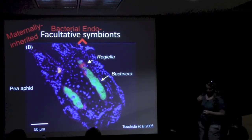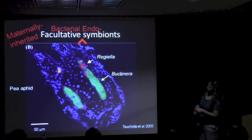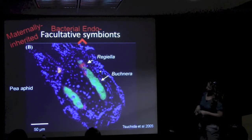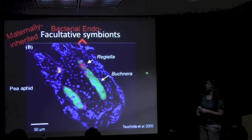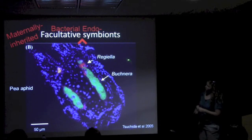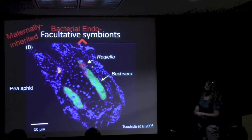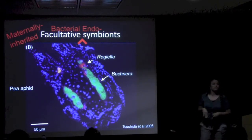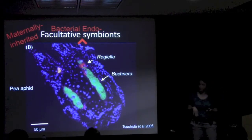As I've been talking, I haven't described the picture. This is again the pea aphid — a different cut through of that U-shaped bacterium. We have the obligate symbiont Buchnera fluorescing green. And for those of you that aren't red-green colorblind, you can see that this other symbiont, Regiella, is fluorescing red. Regiella falls into this facultative category that I've been describing.